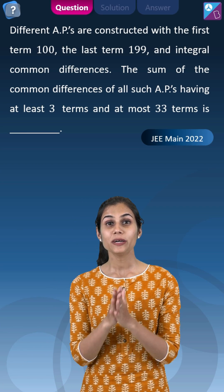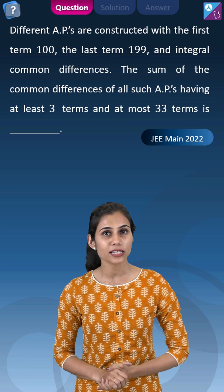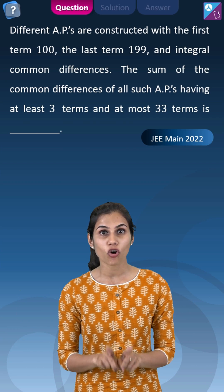Let's check out this interesting question. So here multiple APs are being constructed with same first term 100 and the same last term 199, all of them having integral common differences.